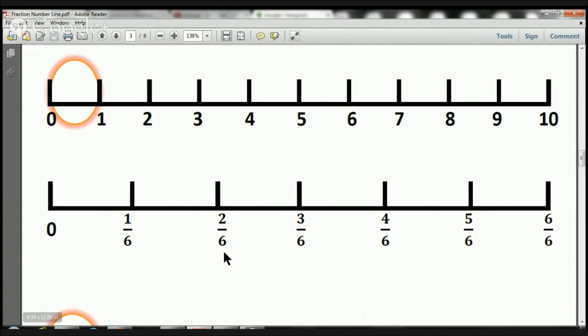Here you have 1 6, 2 6, 3 6, 4 6, 5 6, and 6 6. 6 6, as you know, boys and girls, is going to be equivalent to 1. 6 over 6 is equivalent to 1.